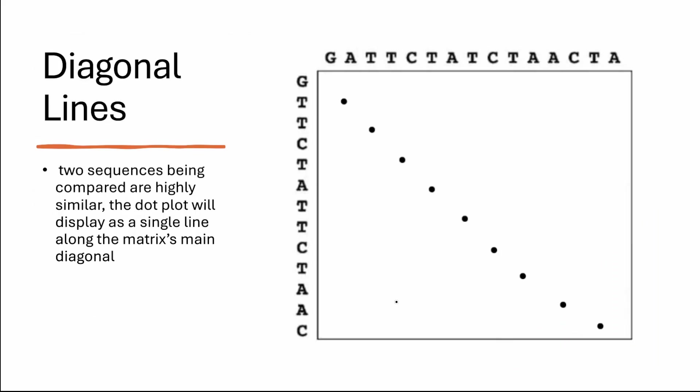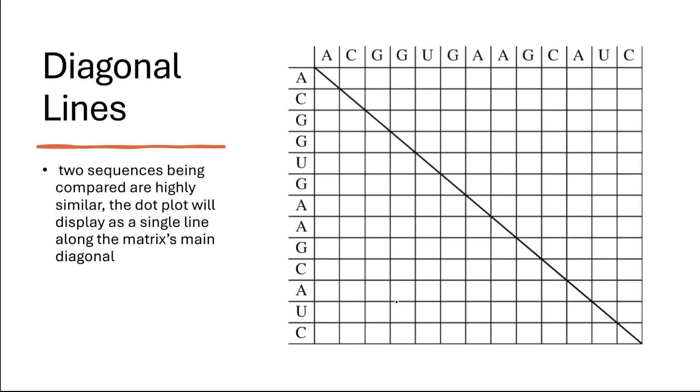If the two sequences being compared are highly similar, the dot plot will display as a single line along the matrix main diagonal. As you can see in this diagram, both the sequences were highly similar, so there is a continuous single line along the diagonal.